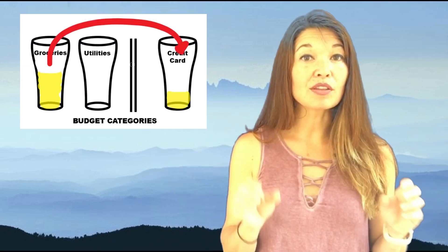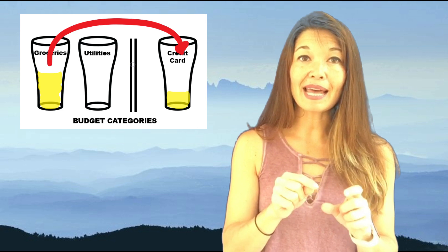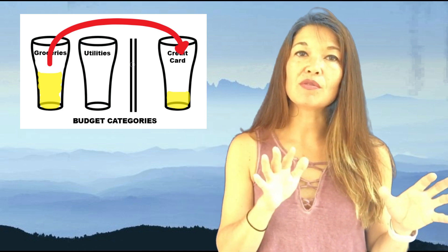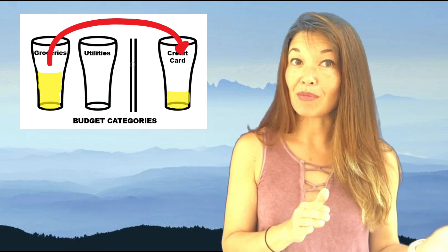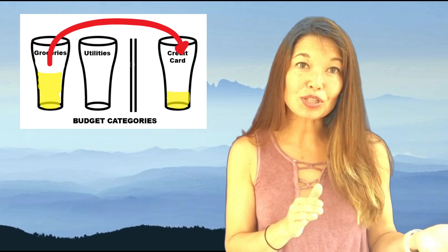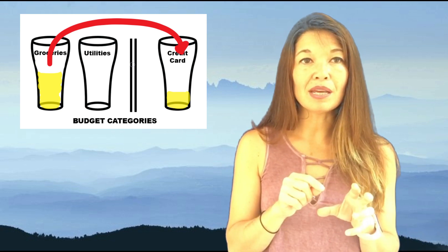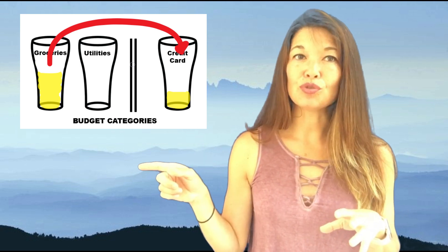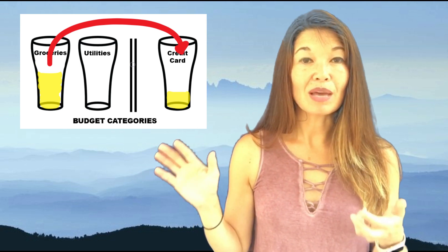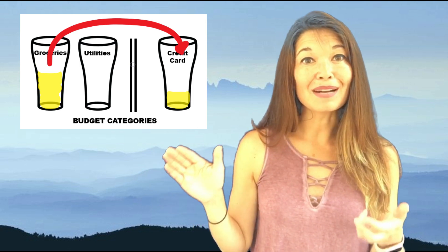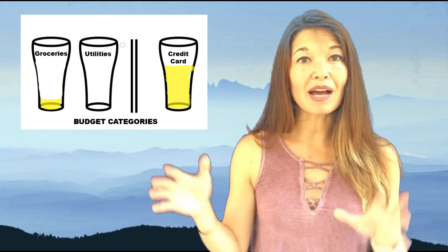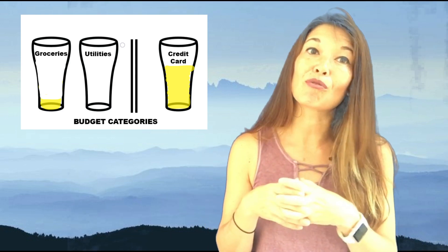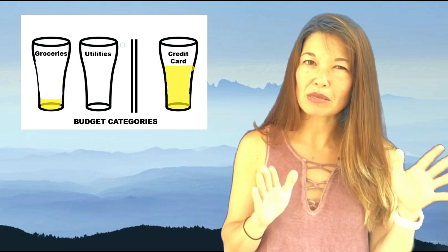If you're using a credit card, the money gets added to the available balance for your credit card, which is also a line item in your budget. So every time you make a purchase, instead of that money leaving immediately, it gets transferred to the credit card category. That means when you're ready to pay your credit card bill, you already have all the money gathered together to pay it right away.